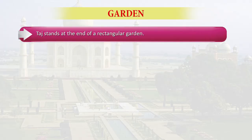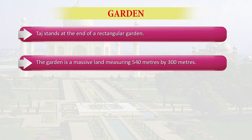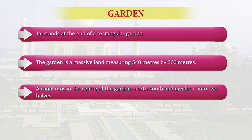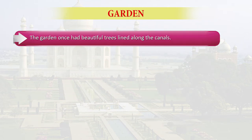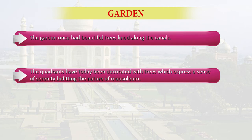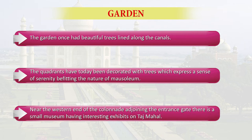If we move forward and understand the details of the garden — Taj Mahal defies the most usual plan of Mughal mausoleums of locating the tomb at the center of a square garden. Taj Mahal stands at the end of a rectangular garden. The garden is a massive land measuring 540 meters by 300 meters. A canal runs in the center of the garden north to south and divides it into two halves. These halves are further divided into quadrants by canals branching in the east-west direction. The quadrants have today been decorated with trees which express a sense of serenity befitting the nature of a mausoleum. Near the western end of the colonnade adjoining the entrance gate, there is a small museum having interesting exhibits on Taj Mahal.